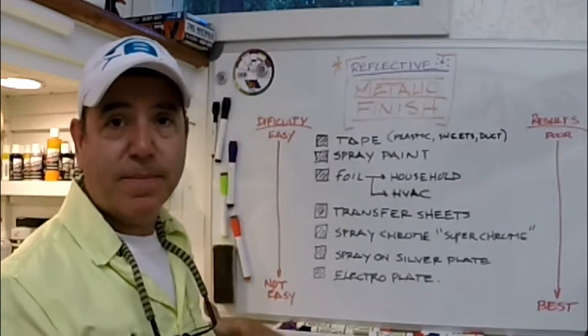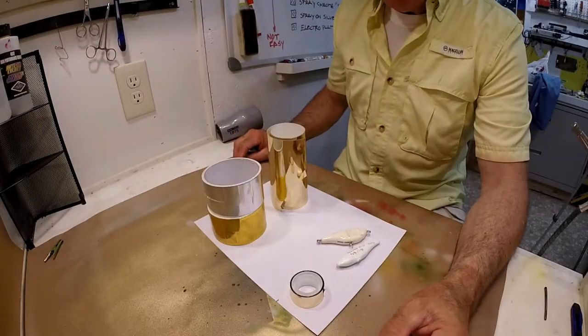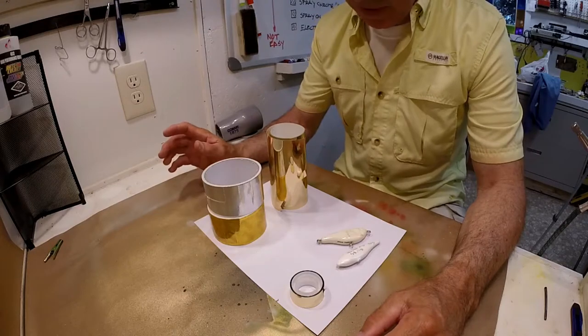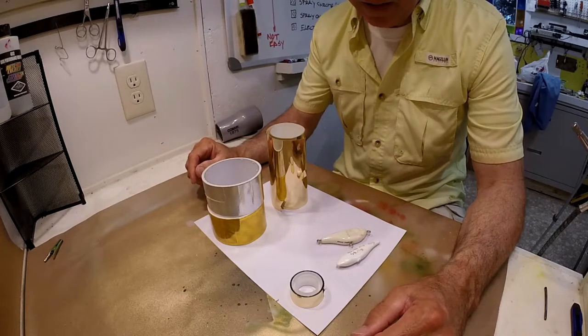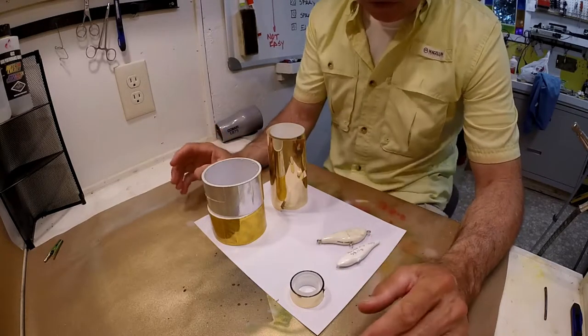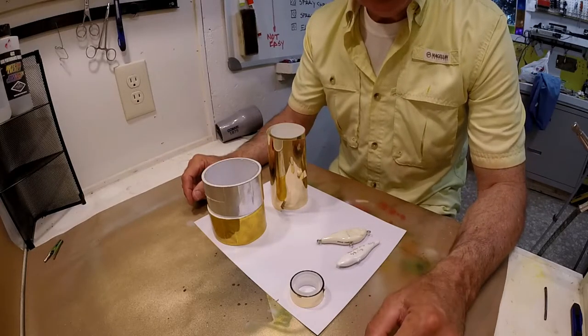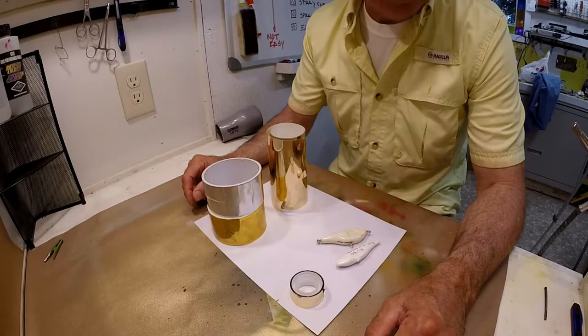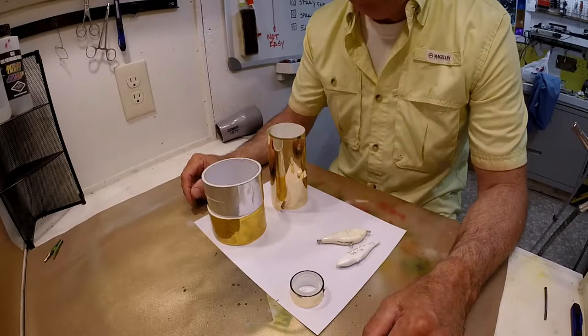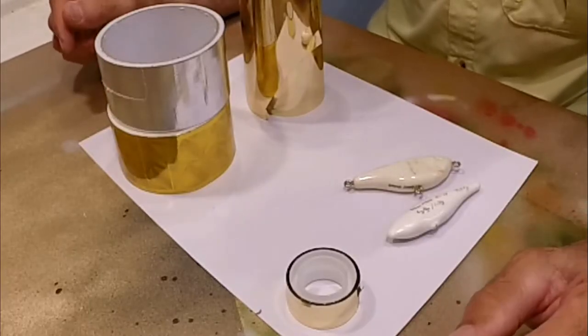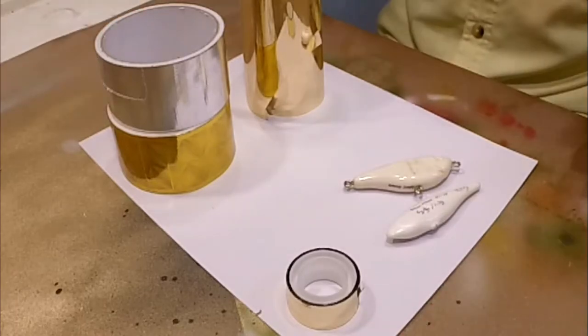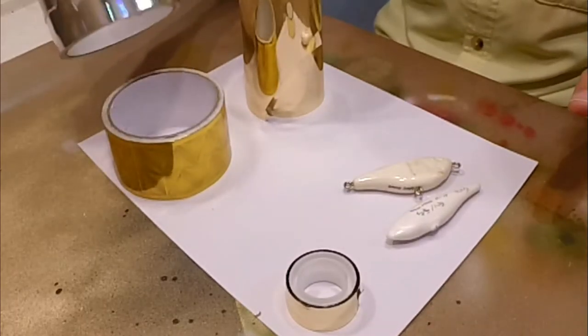Anyway, first taking plastic, stay tuned. Okay let's talk about tapes and how to use tapes to get a metallic reflective surface on your lure. If you haven't seen my putting silver plate on the lure video you should watch that just to see what my goal is - that's really the ultimate.